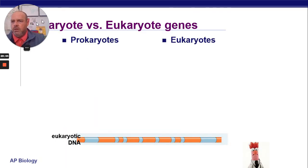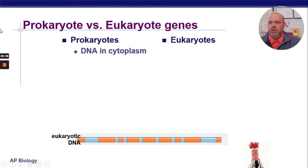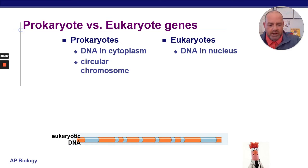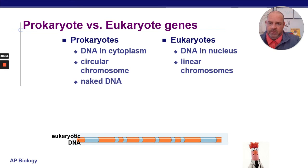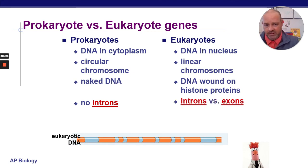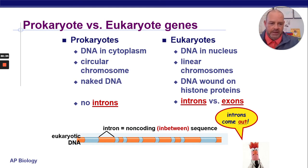Prokaryotes versus eukaryotes: prokaryotes have DNA in the cytoplasm; eukaryotes have it in the nucleus. Prokaryotes have one circular chromosome; eukaryotes have many linear chromosomes. Prokaryotes have naked DNA with no histone winding. Prokaryotes have no introns, so no splicing. In prokaryotes, transcription and translation are simultaneous — ribosomes read the mRNA as it's being transcribed, making protein almost instantly.